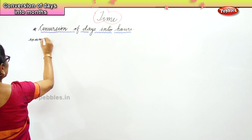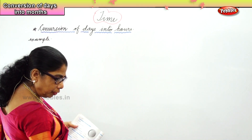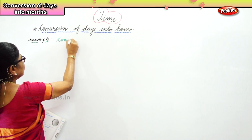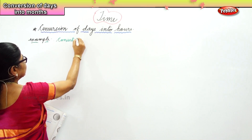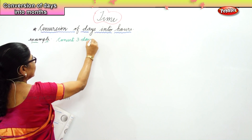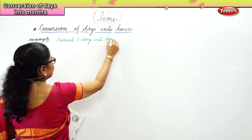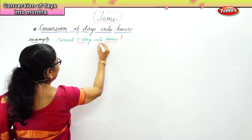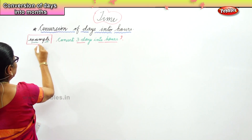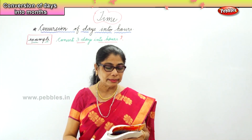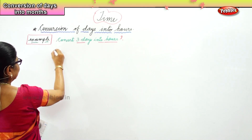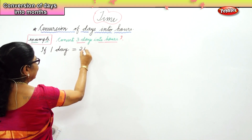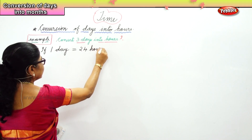We will take an example. I am giving you a small example of converting. Convert three days into hours. Here all we need to remember is: if one day is equal to 24 hours, then we are given three days.